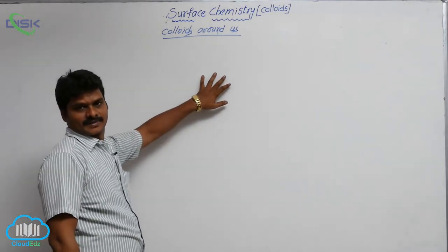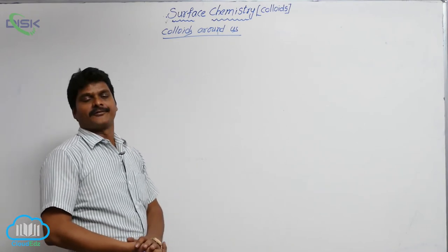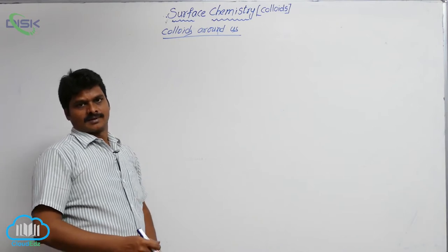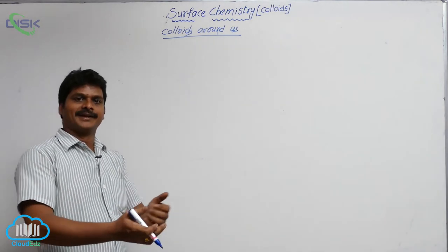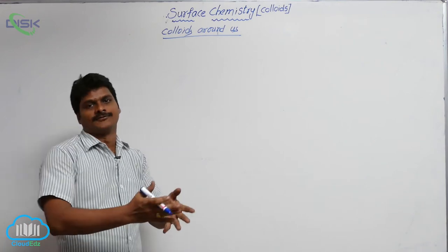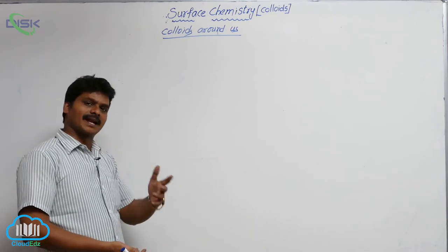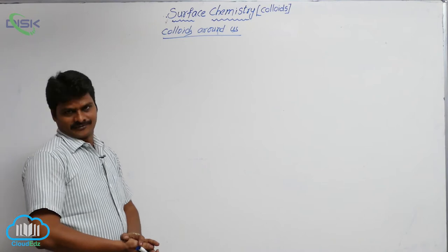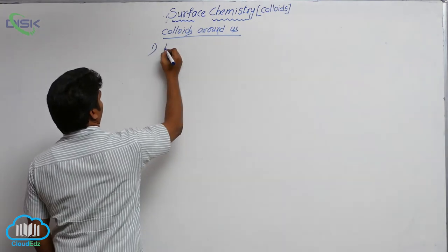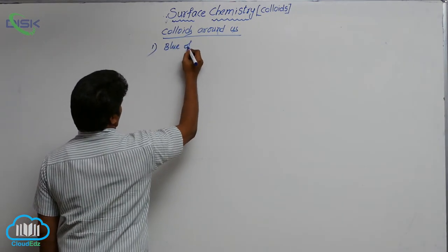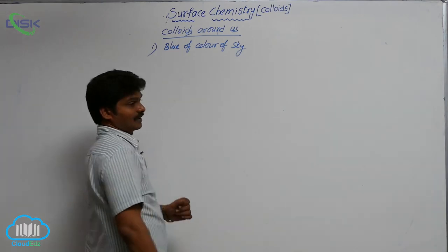Colloids are around us in our everyday life. We come across different colloids — the clothes we wear, the food we eat, the newspaper we read, and the houses we live in all involve colloids. Let's see some general examples in our daily life which act as colloids. The first one is the blue color of sky.